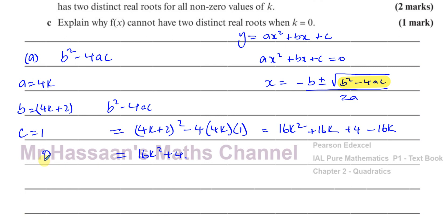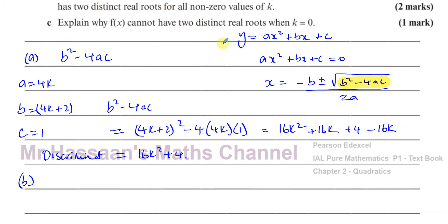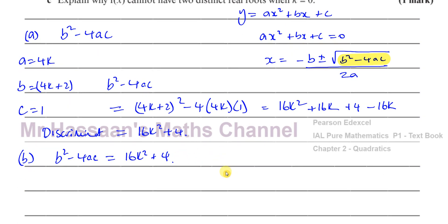So the discriminant equals 16k squared plus 4. Part b says: by simplifying your answer to part a or otherwise, prove that f of x has two distinct real roots for all non-zero values of k. We've already found the discriminant as 16k squared plus 4. What we have to do is show that this is always going to be greater than 0 for all values of k.